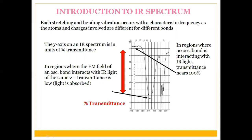Now we will look at the introduction to IR spectrum — how it looks and the terminologies used in interpretation. Each stretching and bending vibration occurs at a characteristic frequency. The y-axis of the IR spectrum is in units of percent transmittance, ranging from 0 to 100. In regions where an oscillating bond interacts with IR light of the same wavelength, transmittance is low, meaning light is absorbed and a peak is observed.